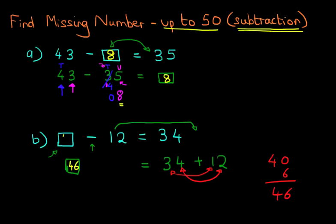We can write this in the original question. 46 minus 12 equals 34. So the missing number is 46. So this is a slightly different method to the one we've used in the previous tutorial. And that is how we find the missing number for numbers up to 50 for subtraction questions.